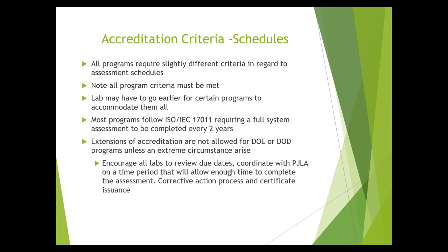Some states require submitting an application within a certain period or going six months before expiration. It is your responsibility to review when you need your assessment. PGLA schedules 60 to 90 days out — our system flags your account when scheduling is needed so your certificate doesn't lapse. For state programs, requirements may differ, so it's up to you to evaluate and inform us of your timing needs.